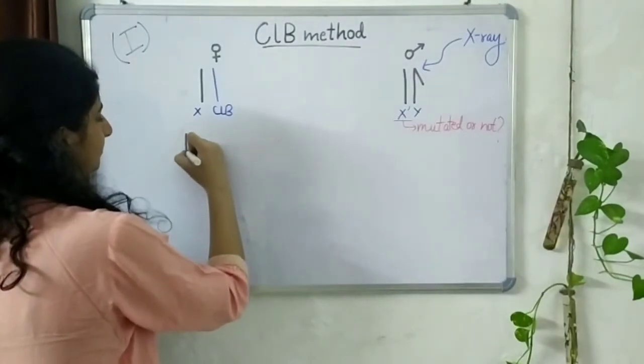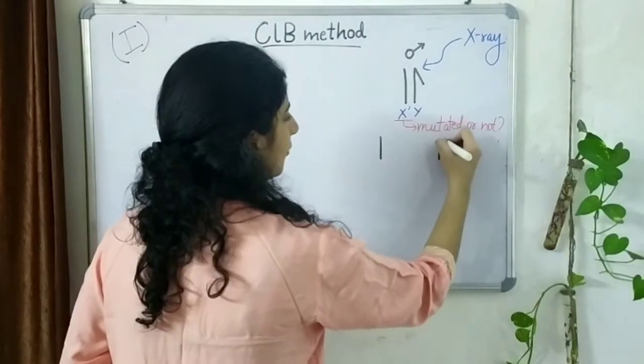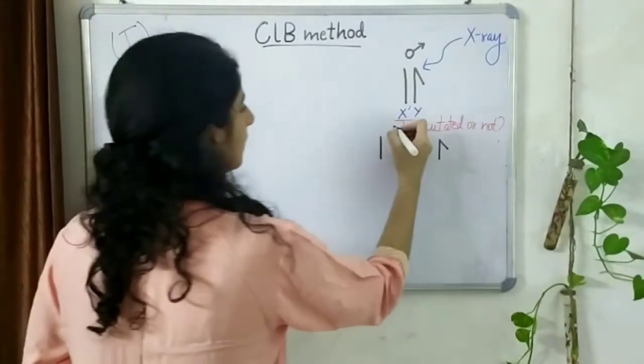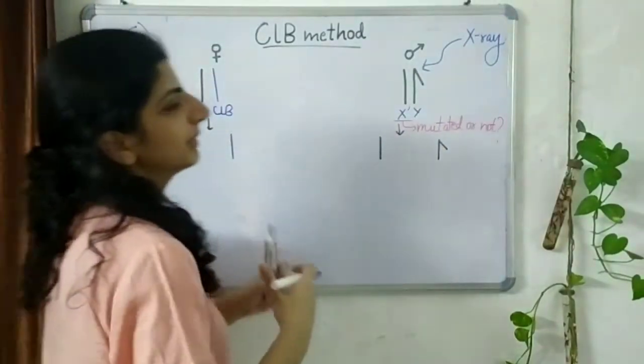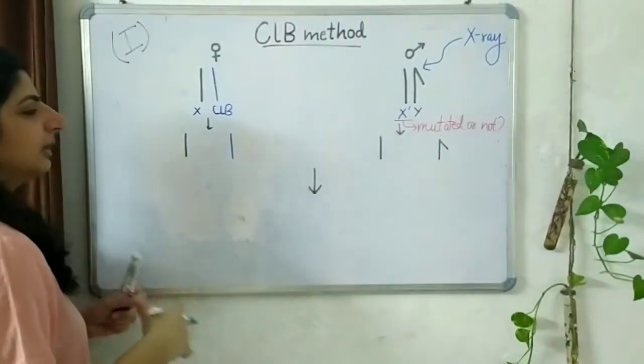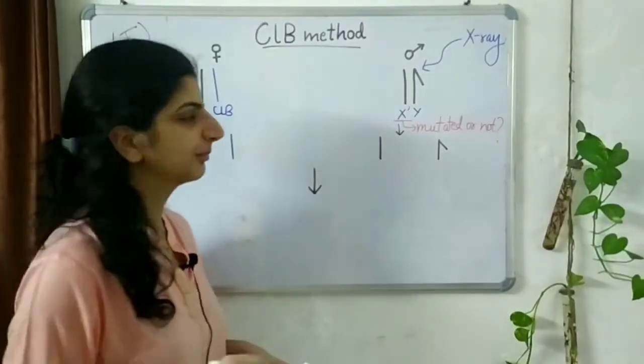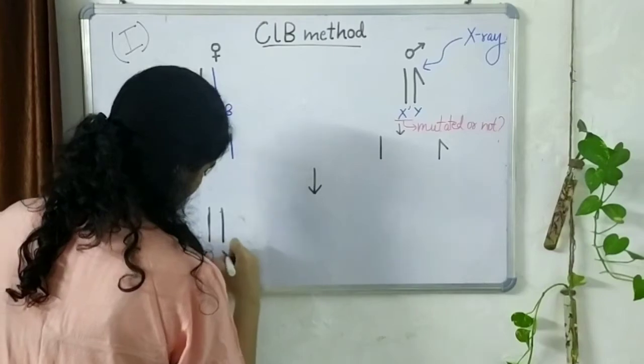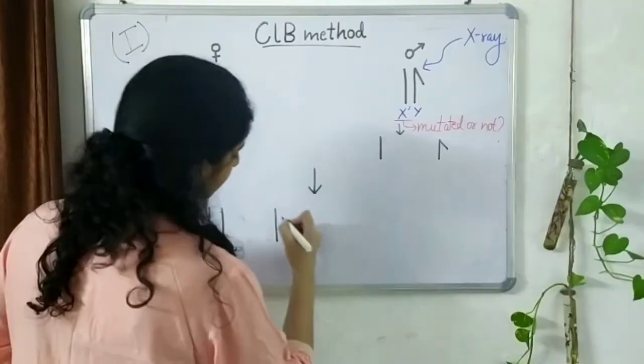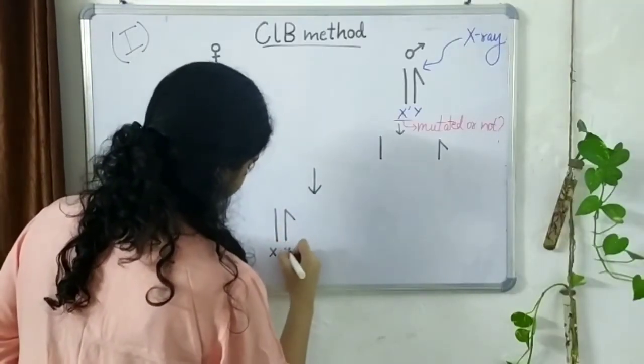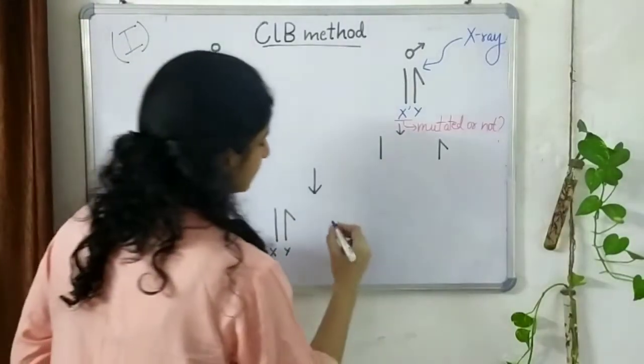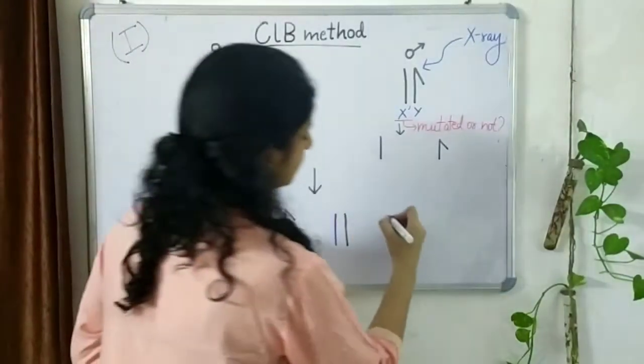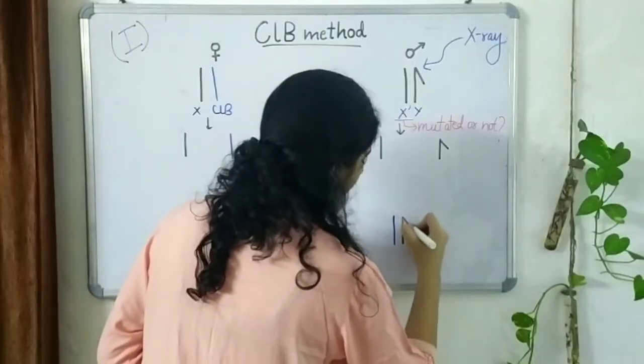There will be a normal X, an X dash, an X dash, a Y and one CLB. As the fertilization and the combinations will occur in the progeny, there will be four possibilities that can happen. The first one will be that the X combines with the X dash. The second one can be that the X combines with the Y of the male. Third possibility will be that the CLB X combines with the X dash of the male. And finally, the CLB X combines with the Y from the male.